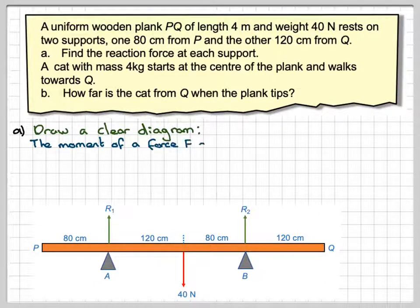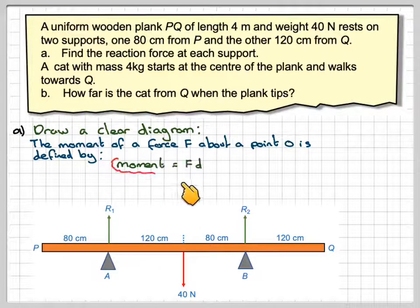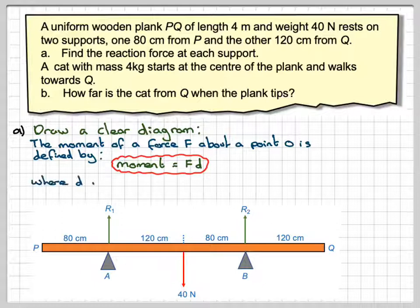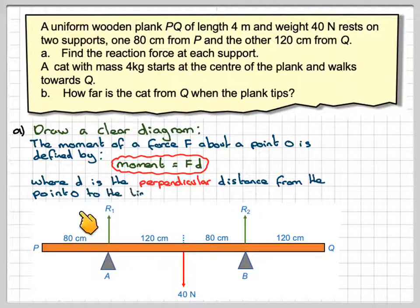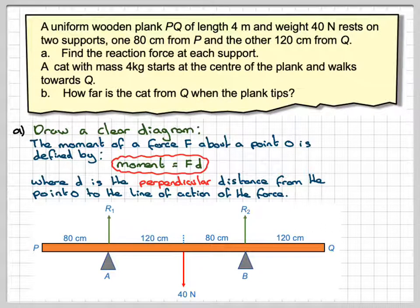Now, the moment of a force F about a certain point O is defined by the moment is equal to the force times D, where D is the perpendicular distance from the point O to the line of action of the force. For example, if we were taking moments about A here, then this force here would be 40 times 120. This is the perpendicular distance for acting perpendicular to the line of force.